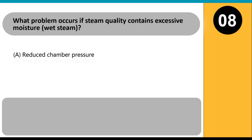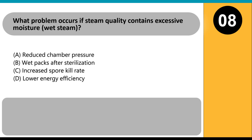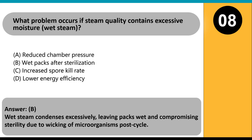What problem occurs if steam quality contains excessive moisture (wet steam)? A. Reduced chamber pressure. B. Wet packs after sterilization. C. Increased spore kill rate. D. Lower energy efficiency. Answer: B. Wet steam condenses excessively, leaving packs wet and compromising sterility due to wicking of microorganisms post-cycle.